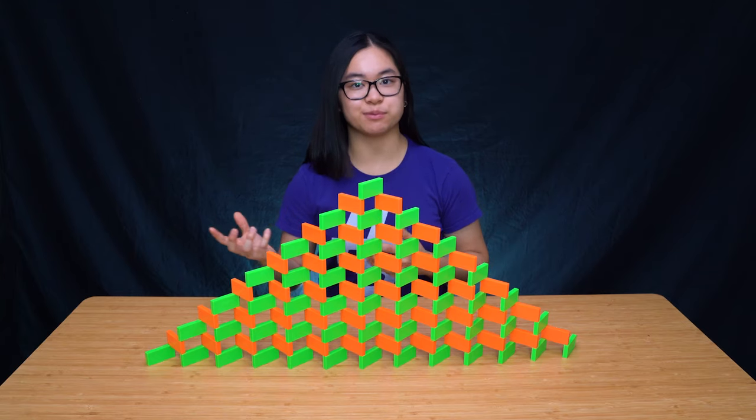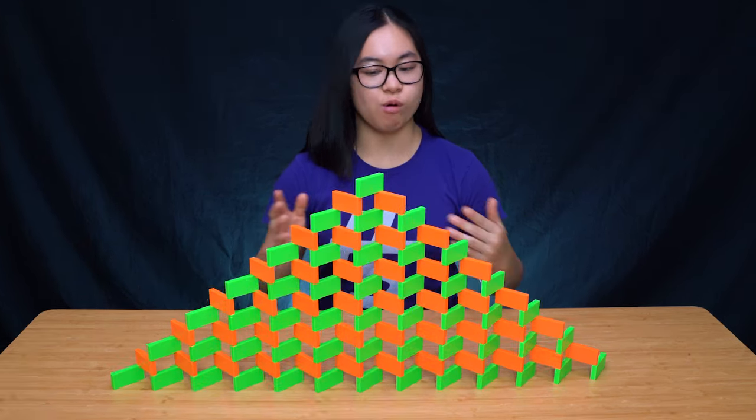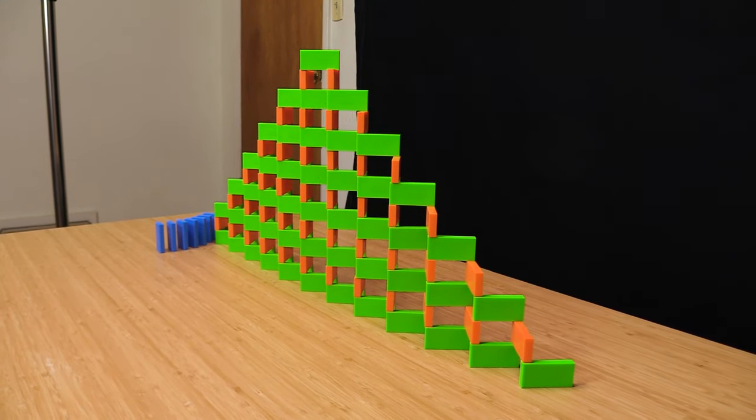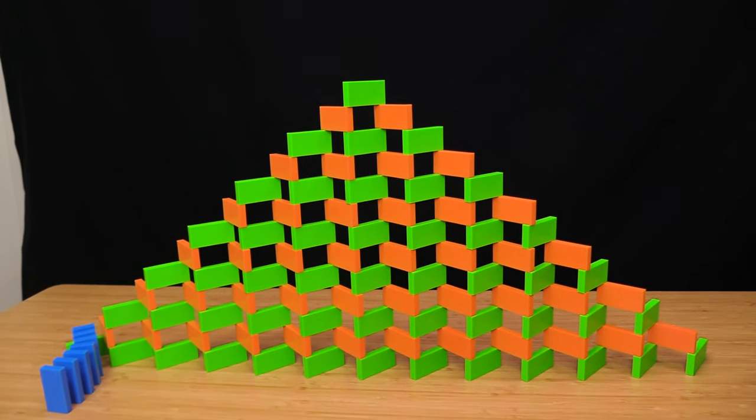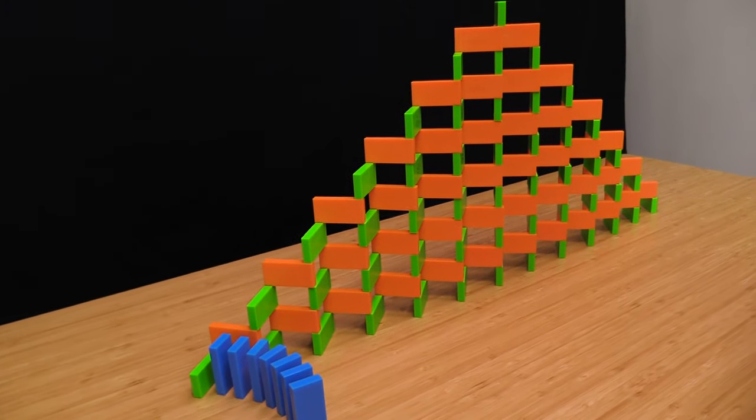Or if you want to see it from a very specific angle, here it looks mostly green, from the front it's 50% green and orange, and from the other side it's mostly orange.